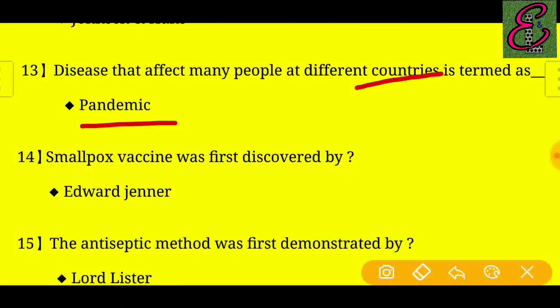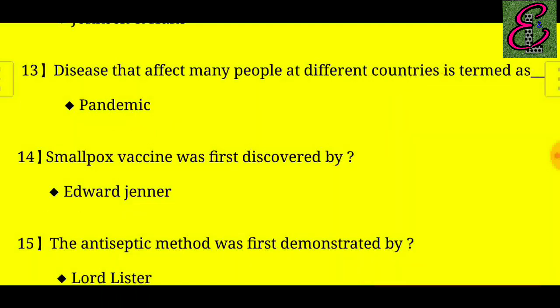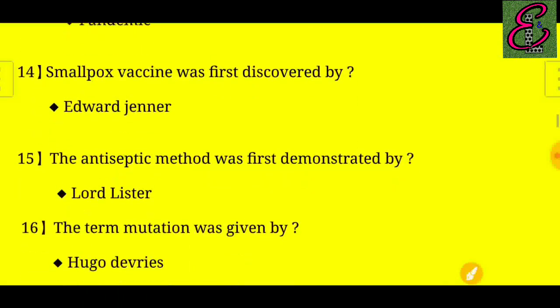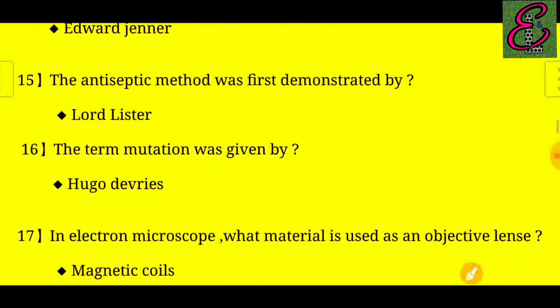Question number fourteen: Smallpox vaccine was first discovered by whom? Answer: The smallpox vaccine was first discovered by Edward Jenner.